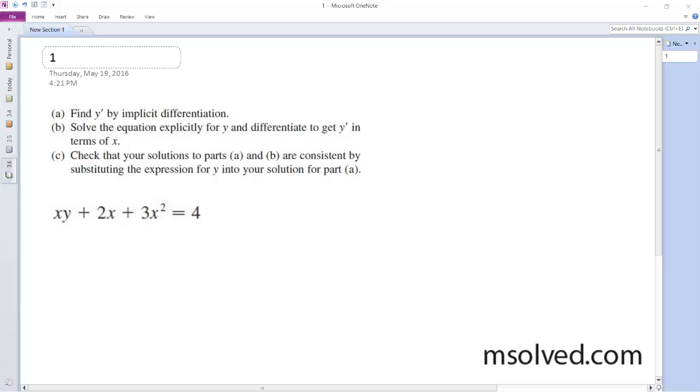Alright, so we're going to find the derivative using implicit differentiation for this. So starting off here, the first part, I'm actually going to use the product rule. So this becomes y plus xy prime, and then plus 2 plus 6x.